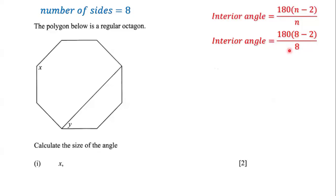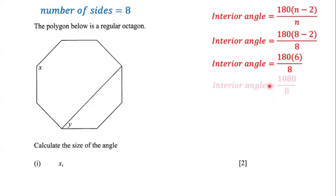Now, what is 8 minus 2? Well, 8 minus 2 is 6. So we have 180 multiplied by 6, all over 8. Now, 180 multiplied by 6 is 1080, and we have to divide that by 8. When we divide 1080 by 8, we get 135.